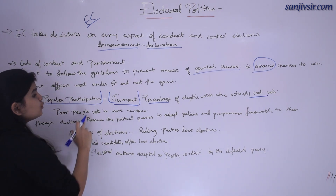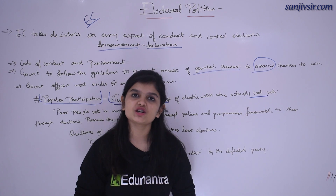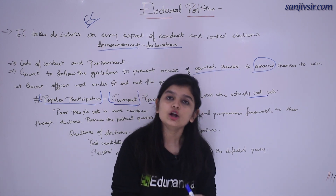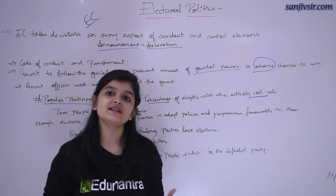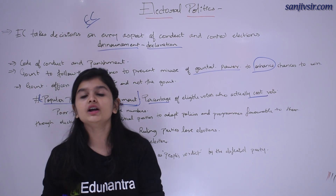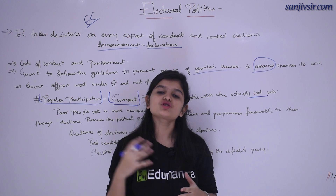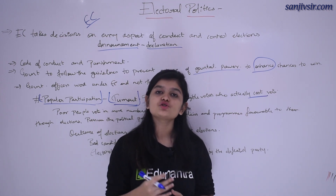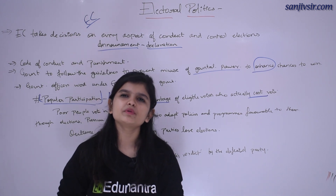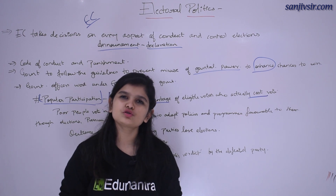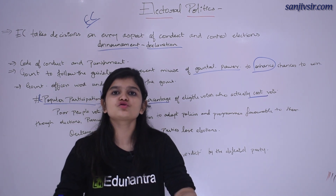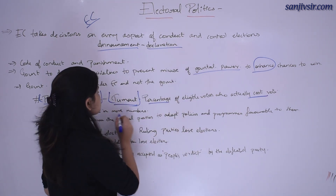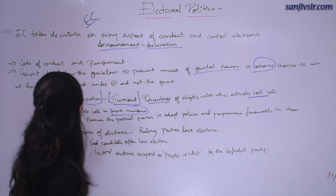Poor people अपने country में, India में, ज़्यादा numbers में जाके vote करते हैं। क्योंकि जो इंसान poor है, उसके पास सारे resources नहीं होते हैं — वो अपनी government से expect करता है कि उसके needs और aspirations पूरे किये जाएं। तो वो उस candidate को vote करता है जो उसे favor कर सकता है। इसलिए poor people का participation ज़्यादा रहता है। Rich और well-class society election process को थोड़ा neglect कर देती है — they do not actually need many things from the government in comparison to the poor people।